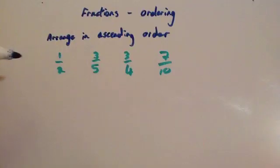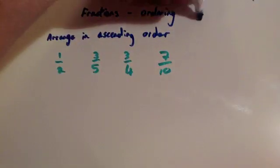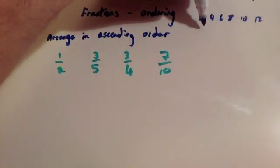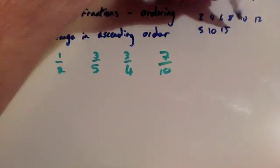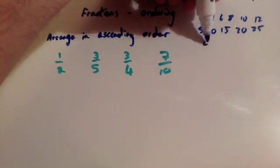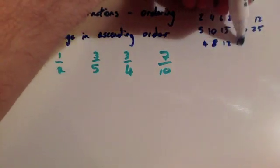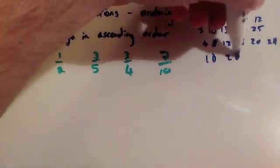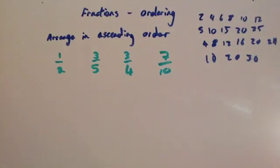If you were to consider what the common denominator would be, you could list them out. You could do 2, 4, 6, 8, 10, 12 and so on. 5, 10, 15, 20, 25 and so on. 4, 8, 12, 16, 20, 24. And 10, 20, 30 and so on. And as you do more of these, you'll be able to spot them straight away like I can.